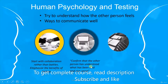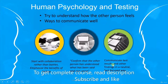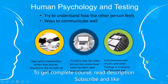The second point is to confirm that the other person has understood what has been said, and vice versa. The third point is to communicate test results and other findings in a neutral, fact-focused way — having all documents, results, and test scripts ready to support your point about why something is a defect, thereby avoiding conflict between tester and developer.